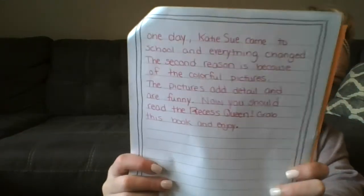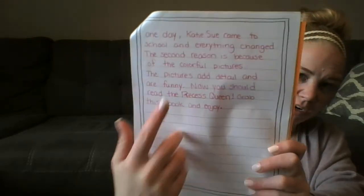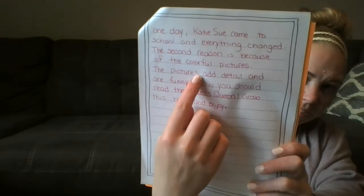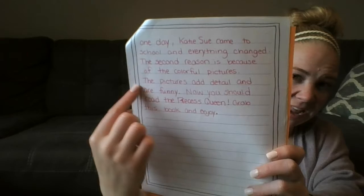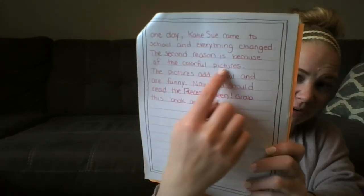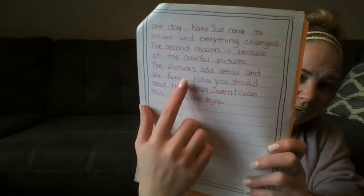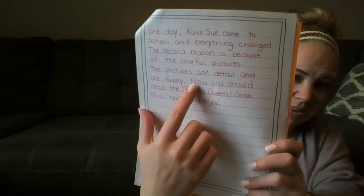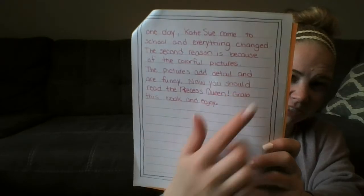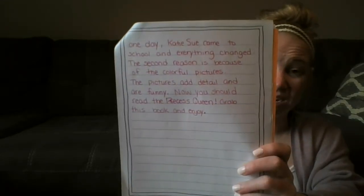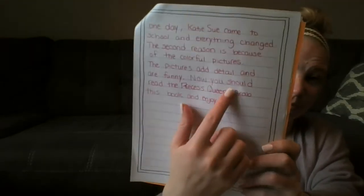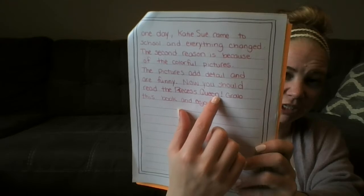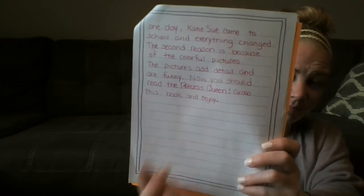Here is what my paper looks like now. Notice I used spaces. My writing is on the line — it's not floating in the air. I started with my capital letters and did not put any capital letters in the middle of my words. I ended with punctuation and I worked on my spelling.